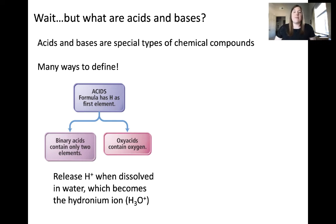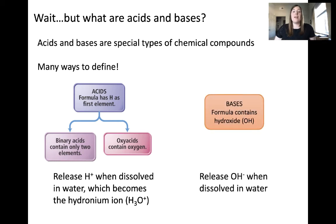How you'll identify if something is an acid from this definition is that the formula of that compound will have hydrogen listed first. Bases, on the other hand, release OH- hydroxide ions when dissolved in water. You'll know that something is a base because it contains an OH or more than one OH in some cases in the formula.